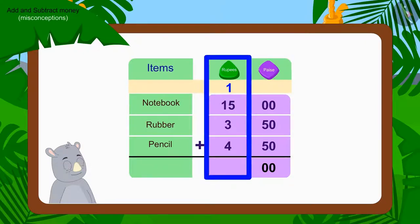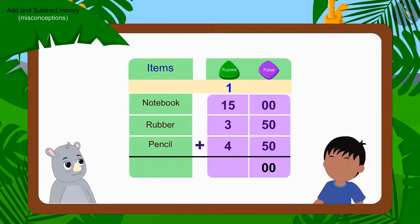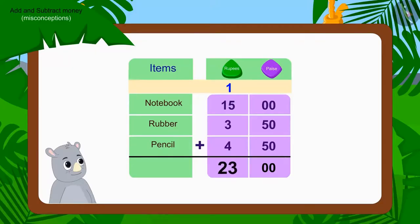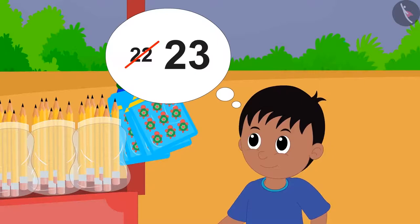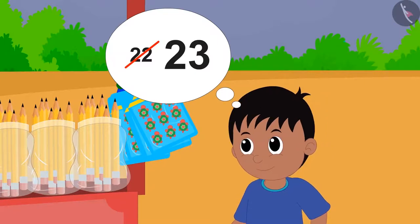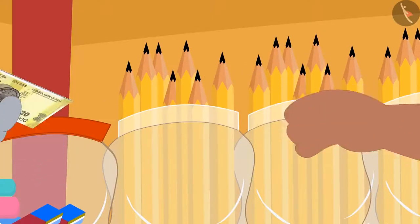Now can you tell, by adding the rupees, how much Raju actually has to pay for the goods to Gaggu? If you want, you can pause the video and find the answer. Well done kids! You have found the right answer. Raju owes Gaggu 23 rupees for those items. Just like you, Raju too caught Gaggu's mistake and gave him 23 rupees.